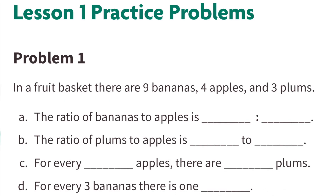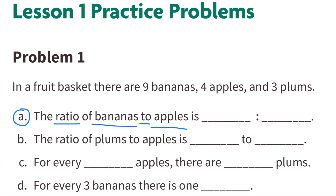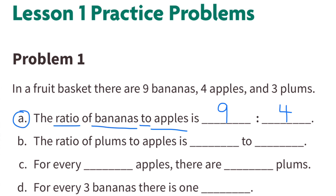Number 1. In a fruit basket, there are 9 bananas, 4 apples, and 3 plums. Part A: The ratio of bananas to apples is 9 to 4, or 9 bananas to 4 apples.